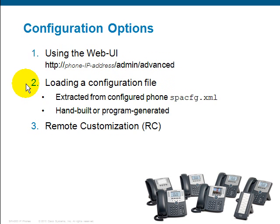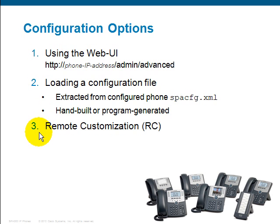Another way of configuring the phone is using a configuration file. You can either extract the configuration file from an already configured phone using the SPA CFG utility, or use a hand-built configuration file or one generated by a programmer. A third option, mainly available to service providers, is a remote customization option.